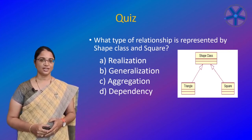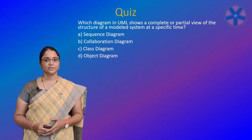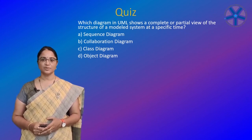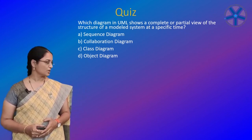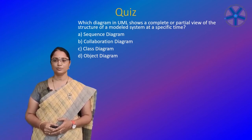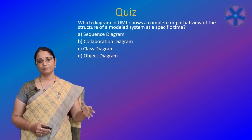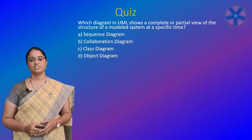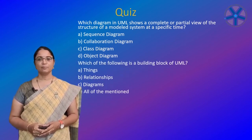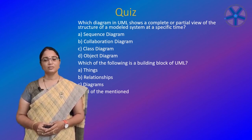Which diagram in UML shows a complete or partial view of the structure of a model system at a specified time? The options are: sequence diagram, collaboration diagram, class diagram, and object diagram. For a specified time — meaning an instance — we use the object diagram.